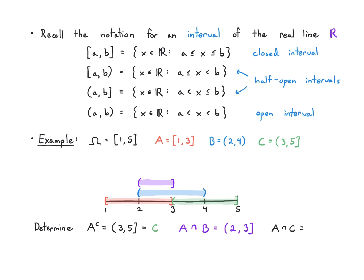A intersect C is empty because C is exactly the complement of A — they share no elements in common. For B union C: looking at what's in both B and C, we start at 2 and C allows us to stretch all the way to 5. For the complement of B: it has a part on the left going from 1 to 2 inclusive, because B does not include 2, and a part on the right starting from 4 to 5 inclusive, because B does not include 4. So B complement is the union of these two closed intervals.